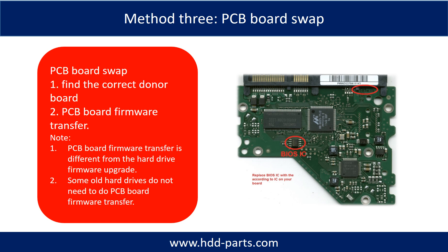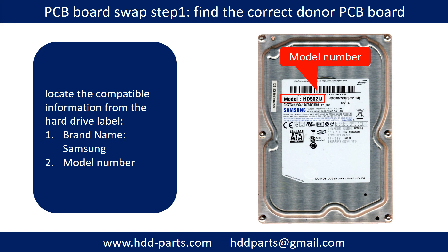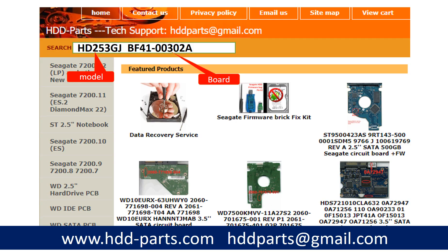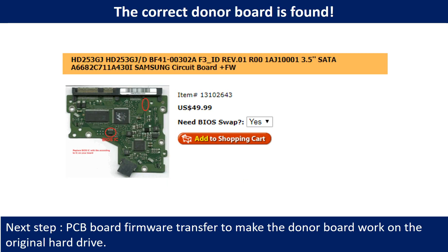Fixing hard drive PCB board — method three: PCB board swap. PCB board swapping includes two steps: one, find the correct donor PCB board; two, PCB board firmware transfer. For step one, take the hard drive out from the enclosure, find out the brand name and model number, then locate the PCB board number. You may use these as a reference to search for the correct donor board.